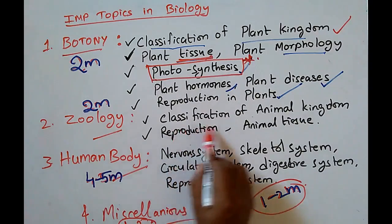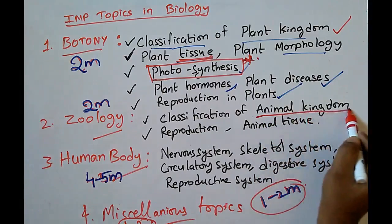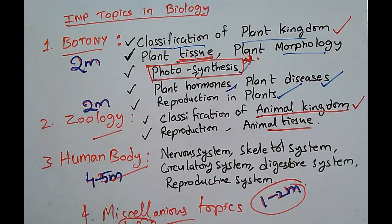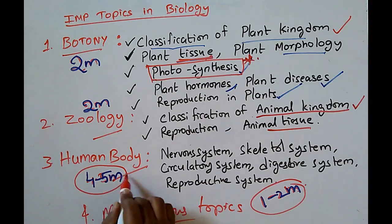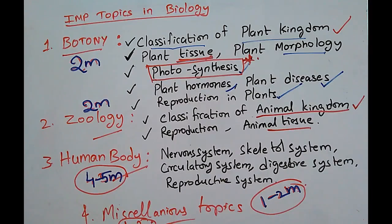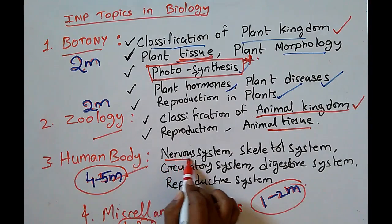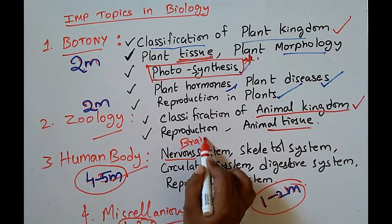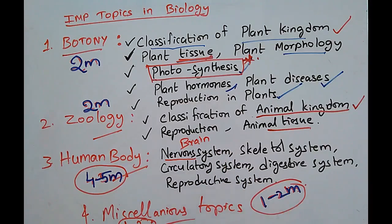If you come to zoology, classification of animal kingdom is also important, and animal tissue. In human body, there are many important topics from where we can expect 4 to 5 marks. In nervous system you have to study about the brain and its functions, what are the parts of the brain, which part does what.